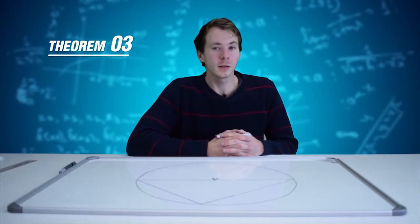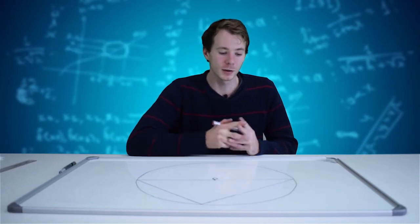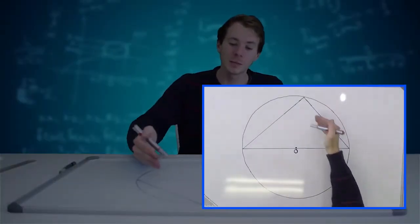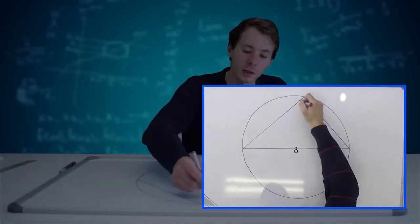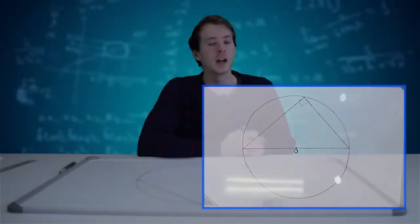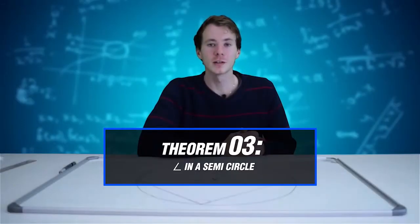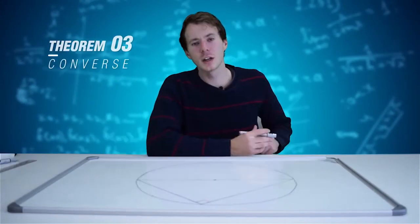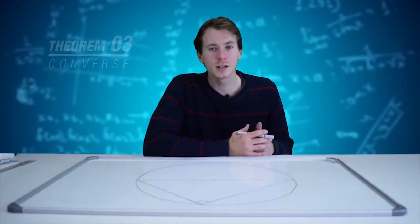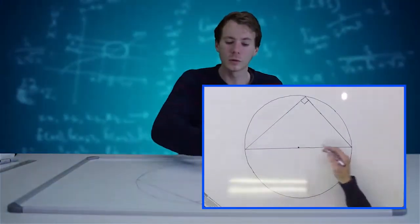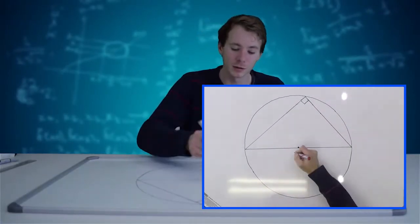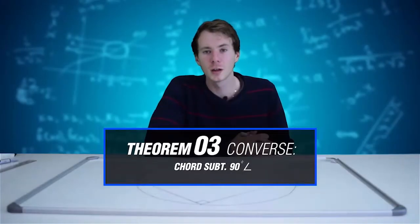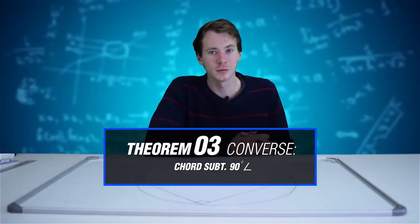Now we're on to Theorem 3. Theorem 3 states that if I have the diameter of a circle subtending an angle at the circumference, then that angle is going to be equal to 90 degrees. The proof for that is: angle in a semicircle. Theorem 3's converse states that if I have a chord subtended by a 90 degree angle, that chord is going to be a diameter. The reason is: chord subtended by a 90 degree angle.